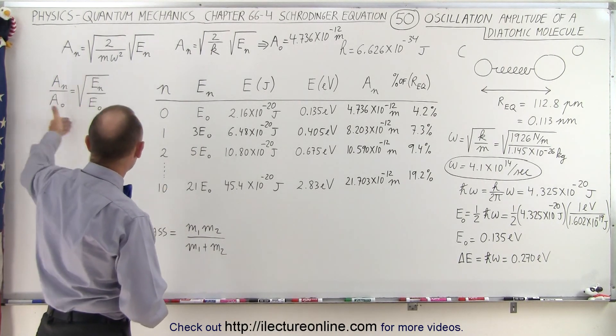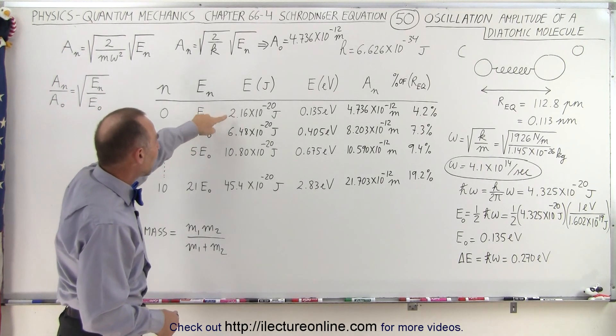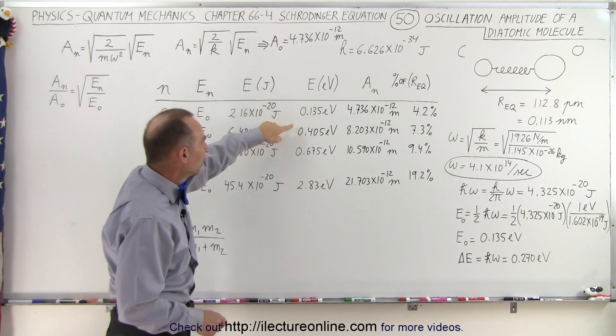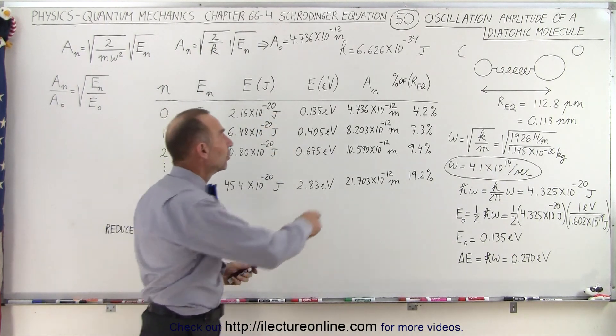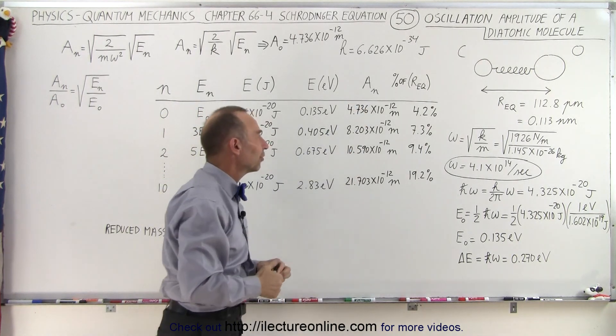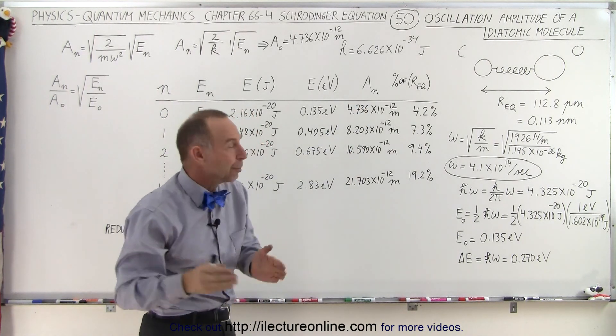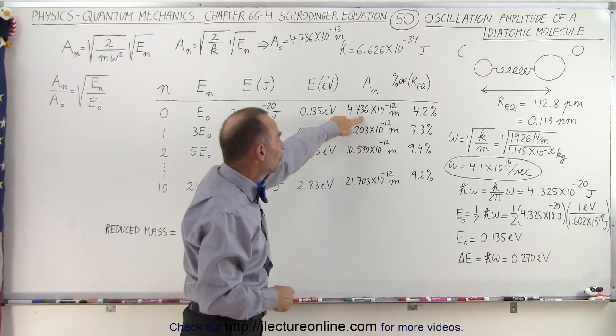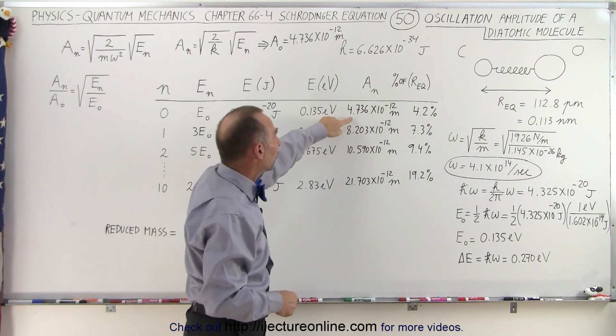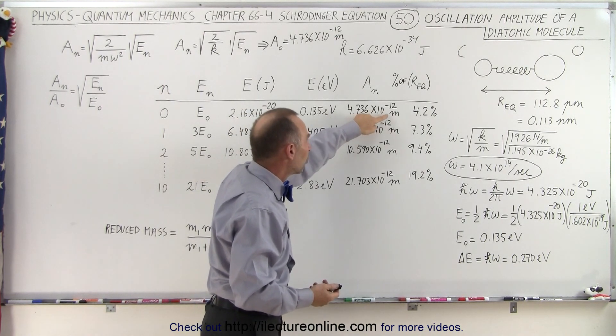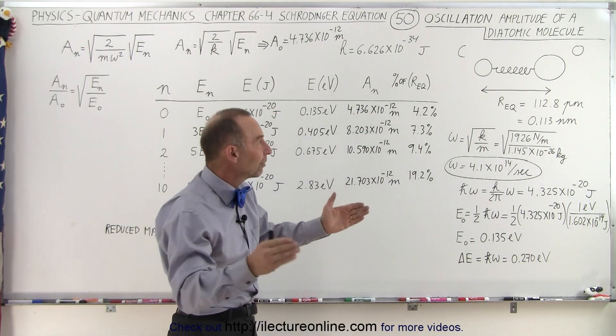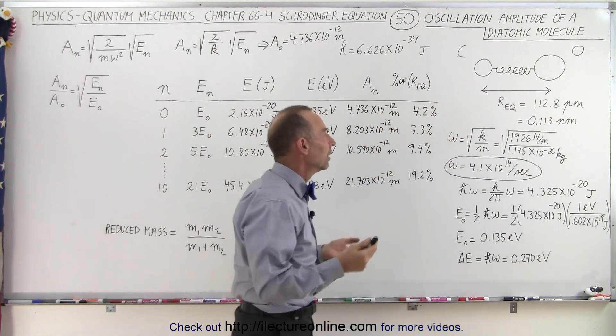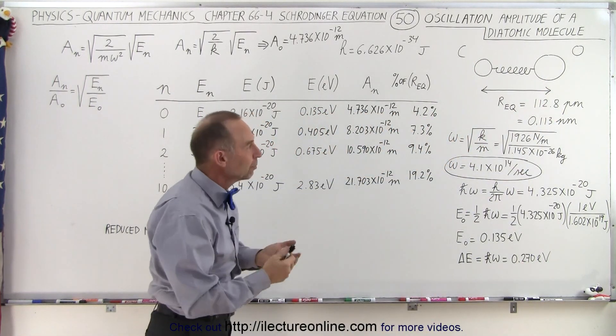Based upon that and based upon this ratio, we can calculate the energy at each of these various quantum states. Then we can also calculate that energy in electron volts and the appropriate amplitude at these various levels. Now what is the percentage of that amplitude relative to the distance between the two atoms? At the zero energy state, when the amplitude is 4.7 picometers or 4.7 times 10 to minus 12 meters, that's 4.2 percent of the total distance between the two atoms, the equilibrium distance between the two atoms.